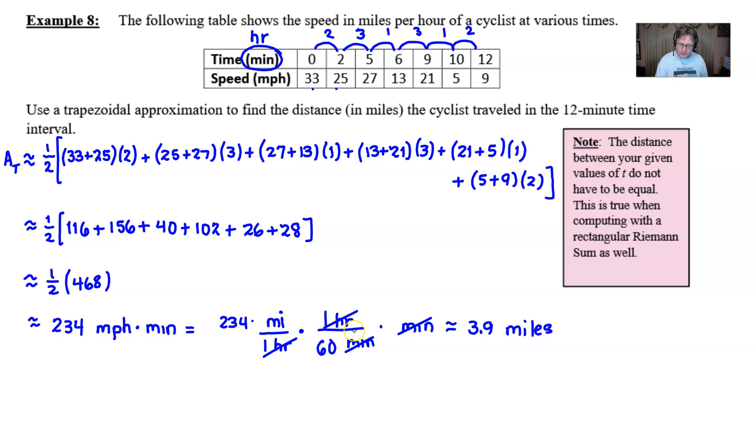And then lastly, one more time, notice that the distance between your given values of t do not have to be equal, and they certainly were not equal here. This is sometimes going to be true when you do your rectangular Riemann sums from a table of values. It's often the case on the AP exam, and you're going to have plenty of opportunities throughout the rest of the course to see some examples like that. Hope this helps a little bit understand the trapezoid rule just a little bit better. As always, we thank you for joining. We'll see you next time.